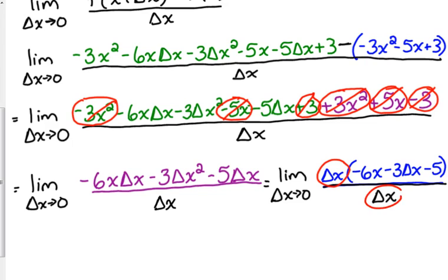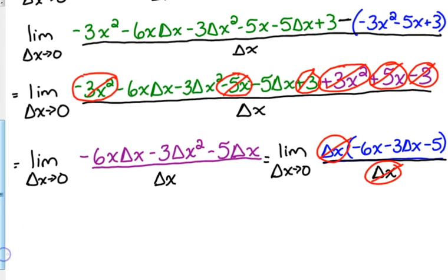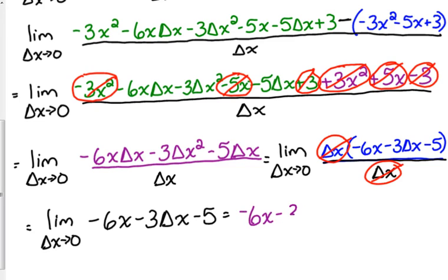Now, we can cancel those delta x's. And when we do that, we have removed the issue of plugging in 0 for delta x because we no longer have it on the bottom. And then we can just plug it in. We can plug in 0 for delta x. So, our final answer is negative 6x minus 5. Negative 6x minus 5.